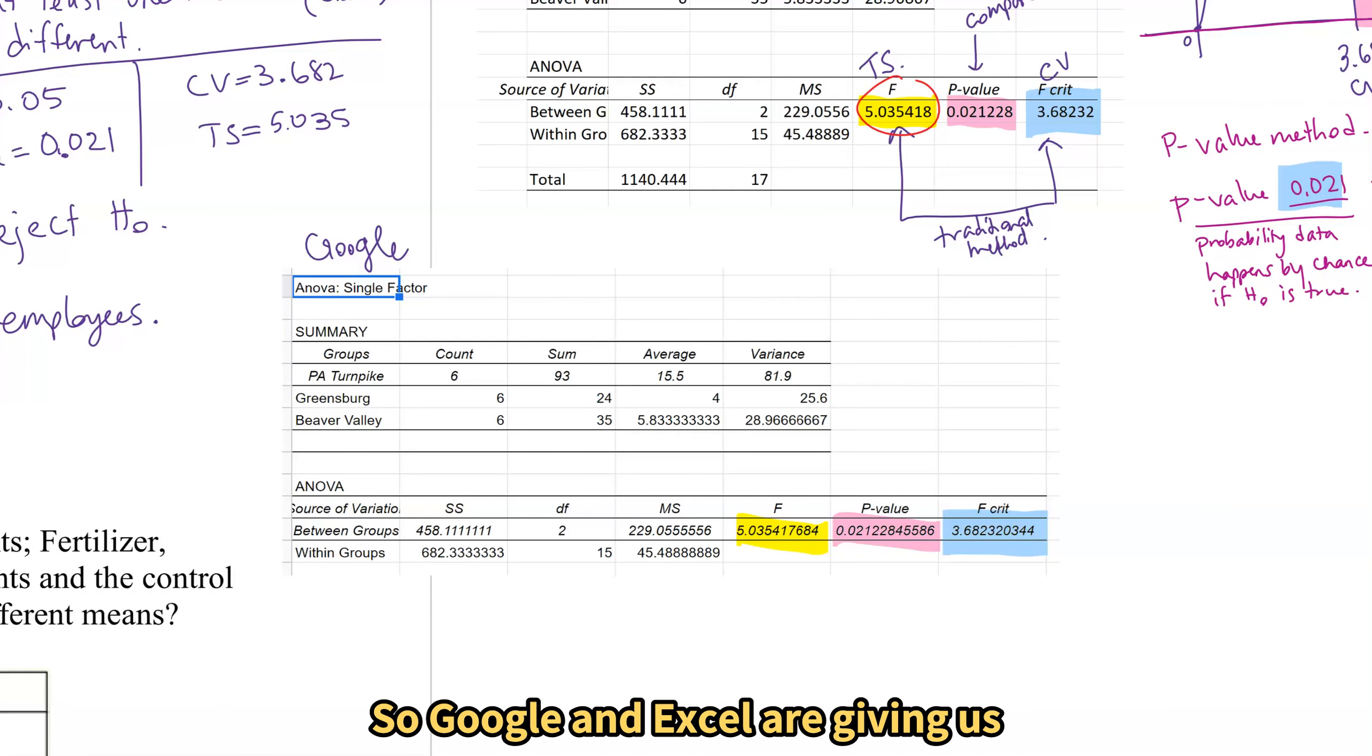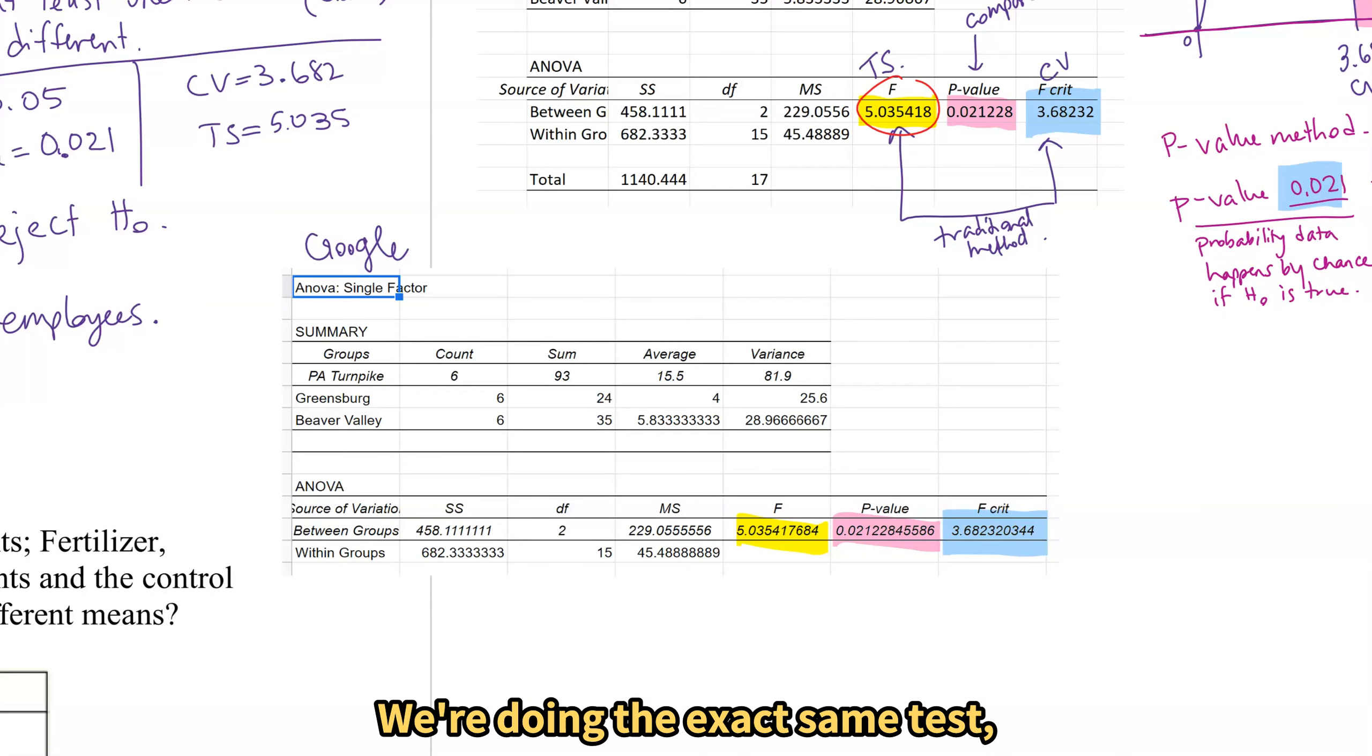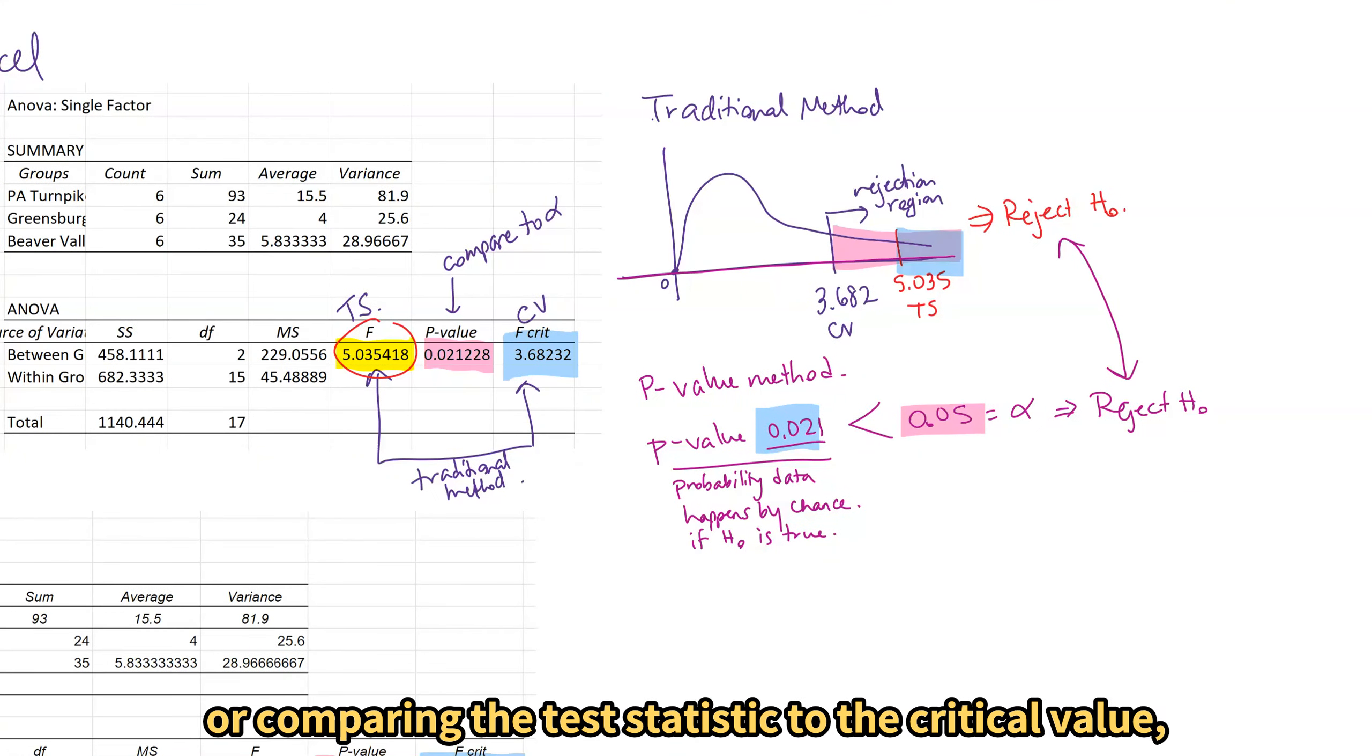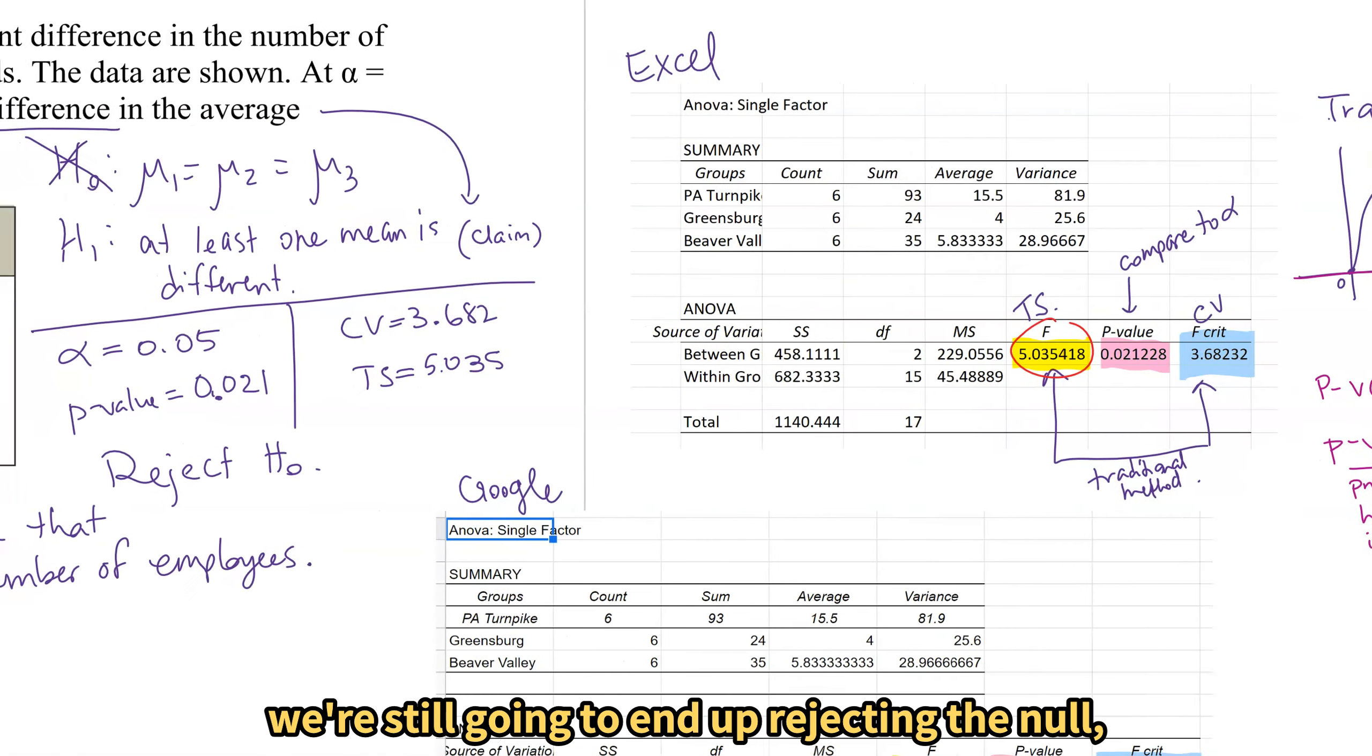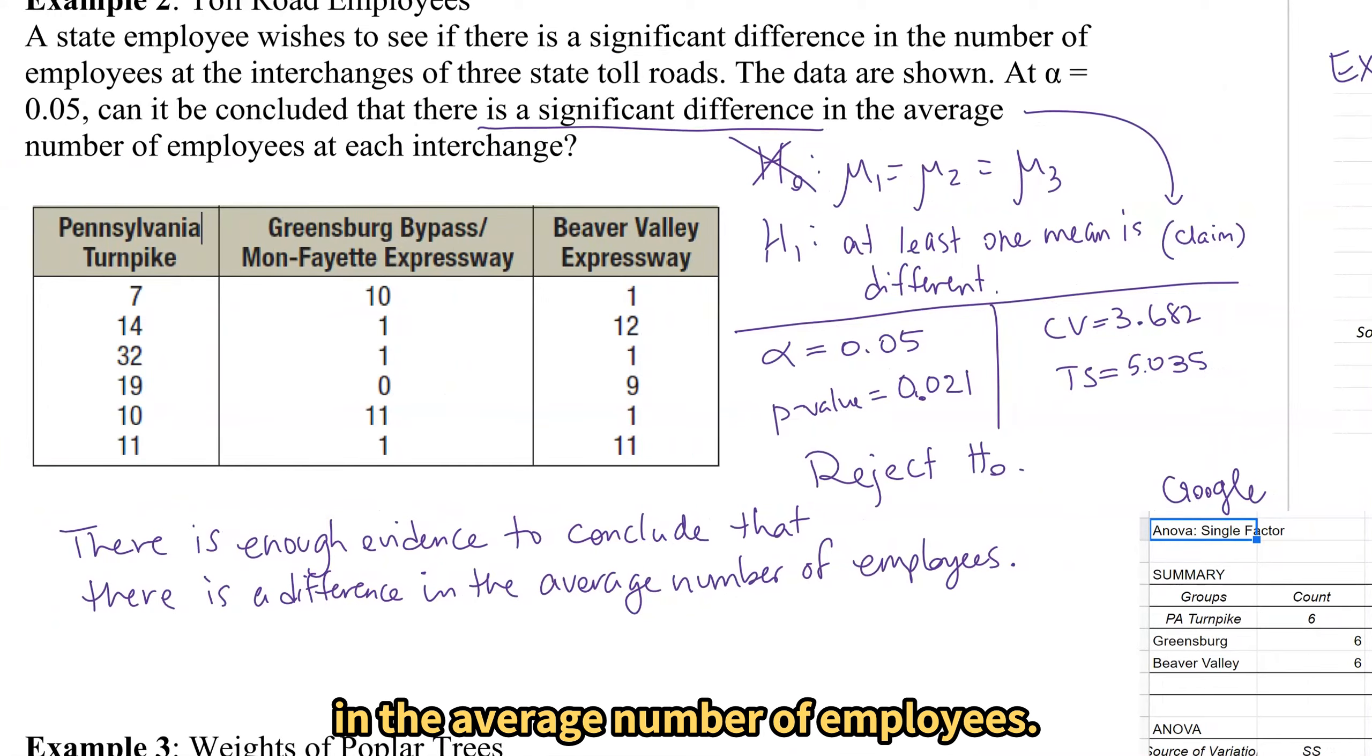So Google and Excel are giving us the same information and this is awesome because this is what should happen with technology. We're doing the exact same test. We're putting in the exact same data. We should end up with the exact same results. And we do. So everything that we did before with Excel, comparing p-value to alpha or comparing the test statistic to the critical value, we're still going to end up rejecting the null and we're still going to have enough evidence concluding a difference in the average number of employees.